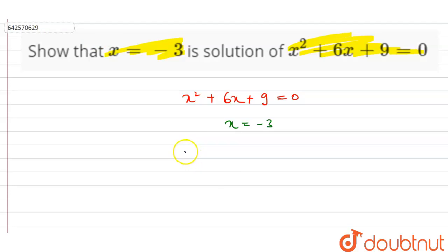So we put x = -3, so (-3)² + 6 × (-3) + 9 = 0.